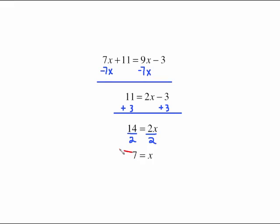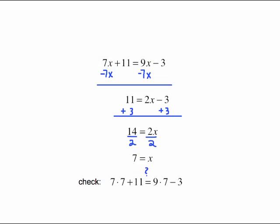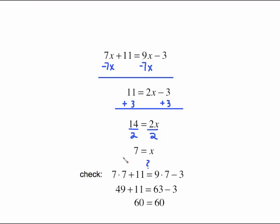To do this check we're going to have to put 7 in for that x and 7 in for that x and see if the two sides are equal to each other. So 7 times 7 is 49 plus 11 which is 60. On this side 9 times 7 is 63. Subtract 3 from that gives us 60. It checks so we know x equals 7 is the correct answer.